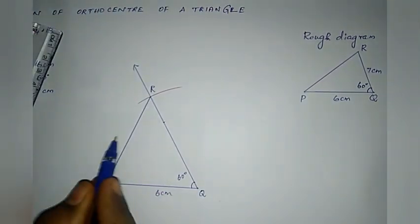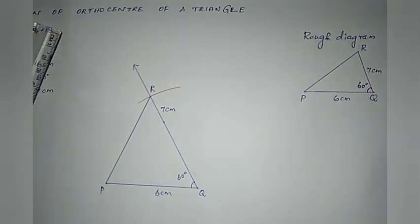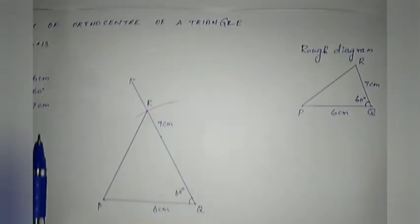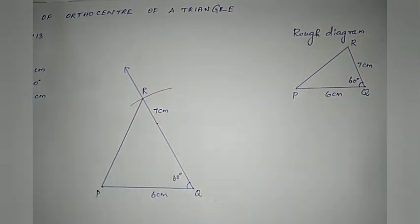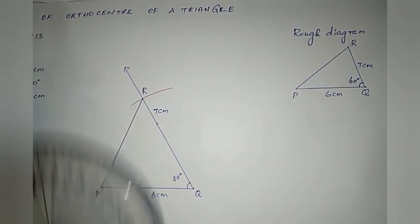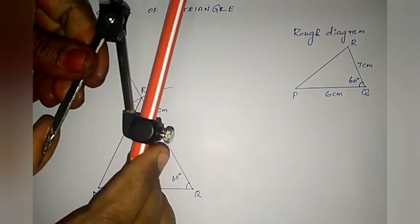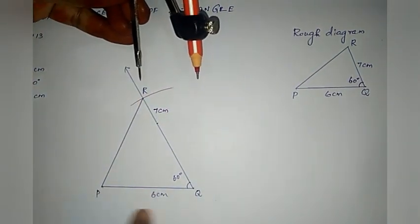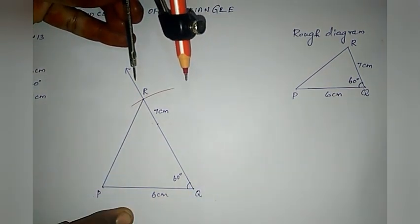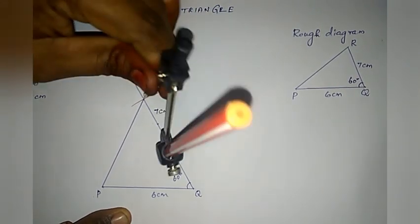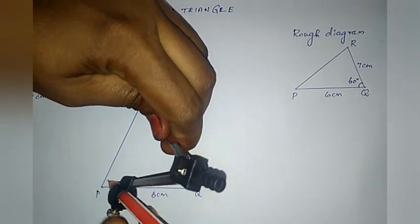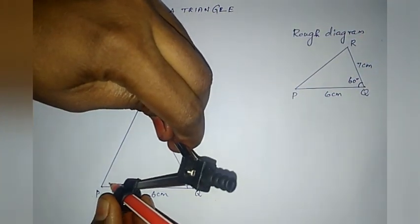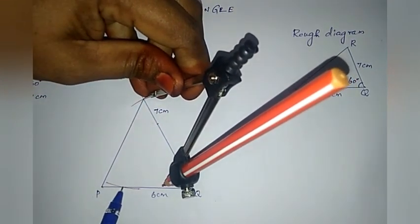Now the triangle is complete with two sides and one angle. Next we need to drop the altitudes. The altitude is a 90 degree line. We will use a compass. Place the compass on the opposite side, stretch it to cut two arcs — cut the arcs on both sides, then cut the second arc.